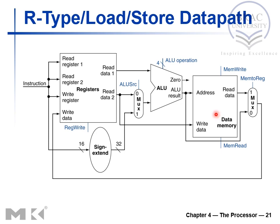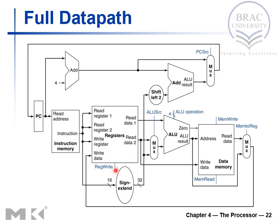We have a data memory for read and write operations. When performing ADD, we don't need data memory output, so the control unit sends 0 to select the ALU result for write-back. When performing a load operation, the ALU generates the memory address, and the control unit sends 1 to select the data memory output for the destination register write-back. This shows the full data path for R-type and I-type instructions.